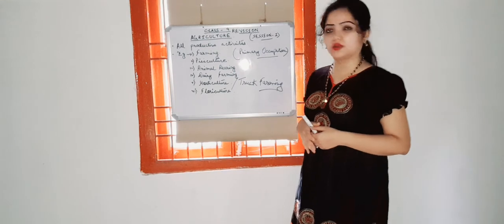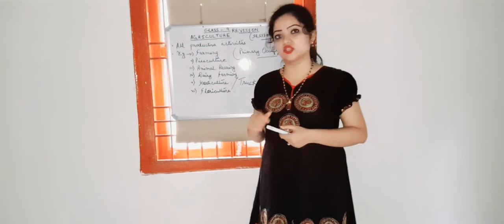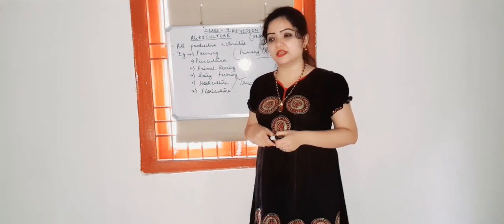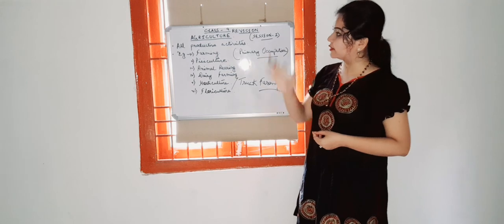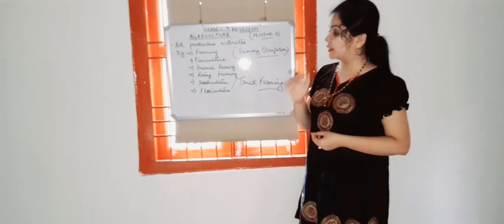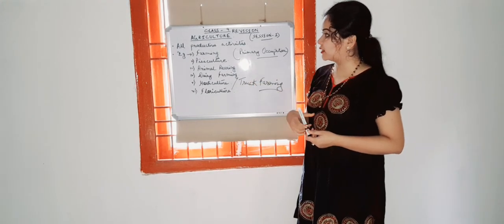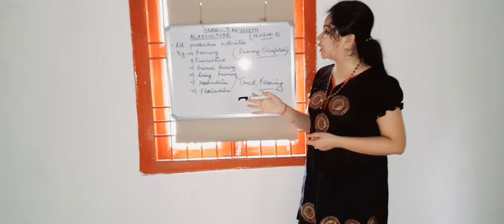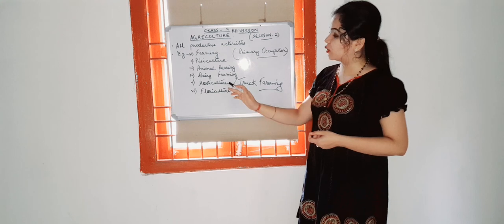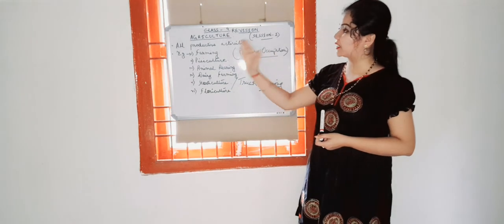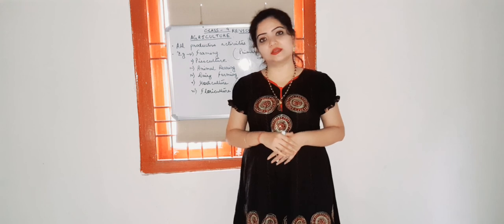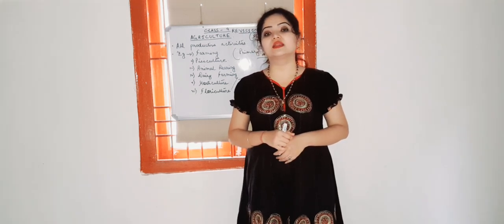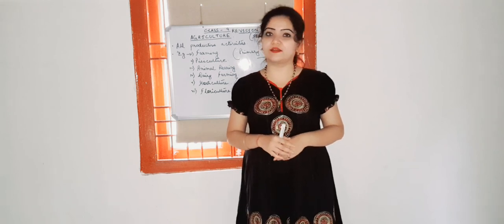I think this much is quite clear to all of you. This is only a revision class for our agriculture chapter, and we will complete our entire syllabus. So in this session we have studied the meaning of agriculture and its various practices — farming, pisciculture, animal rearing, dairy farming, horticulture, truck farming, and floriculture. All these activities can be termed under the single meaning of primary occupation. In the next session, we will study the types of agriculture. Thank you so much.